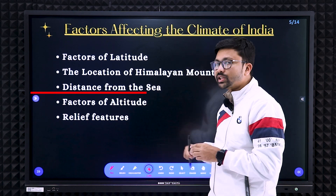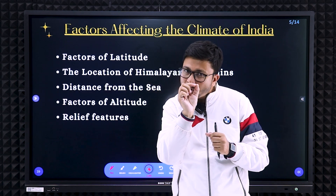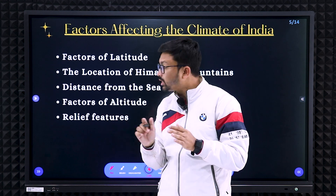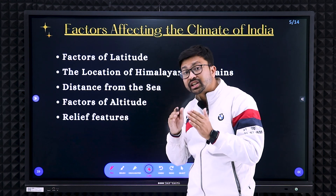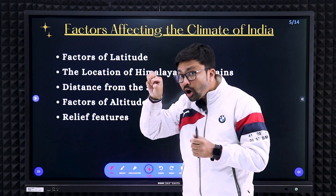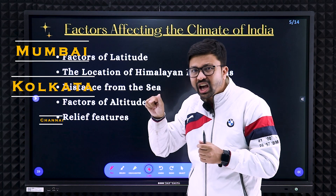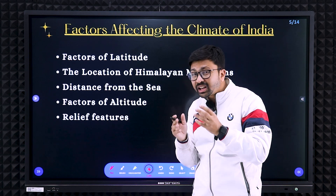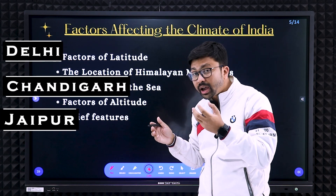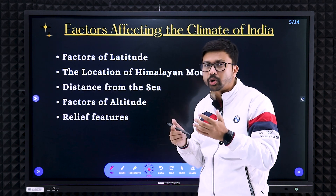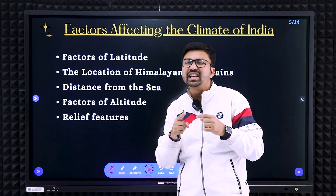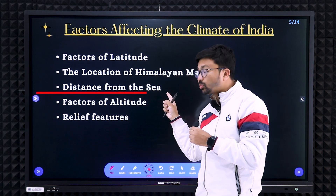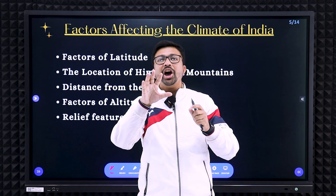Distance from the sea: if the question mentions 'range of temperature' or 'summer is more extreme than winter,' the answer relates to distance from the sea. Coastal cities like Mumbai, Kolkata, and Chennai have equable climate — not too warm and not too cold. On the other hand, cities like Delhi, Chandigarh, and Jaipur are far from water bodies, so they have extreme or continental climate — summer is too hot and winter is too cold.